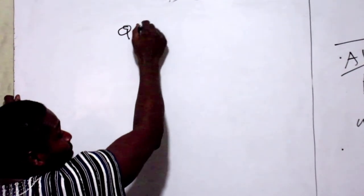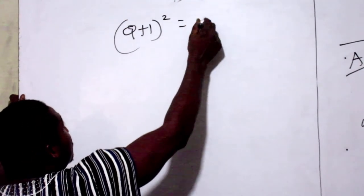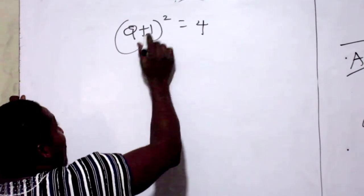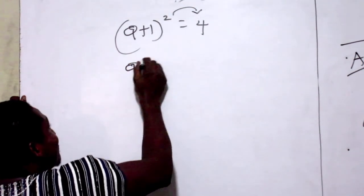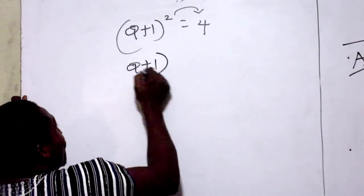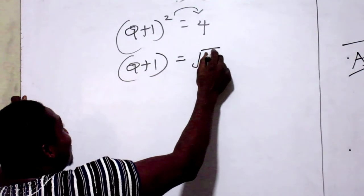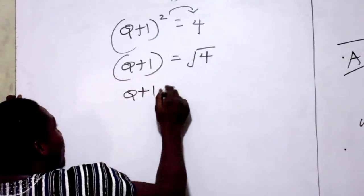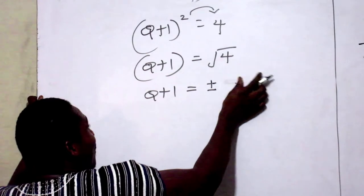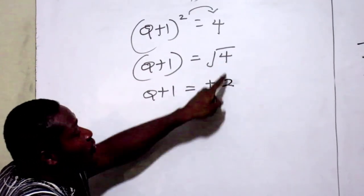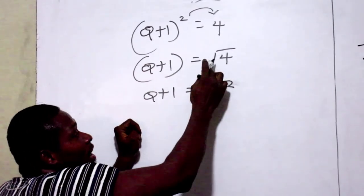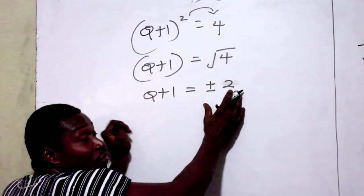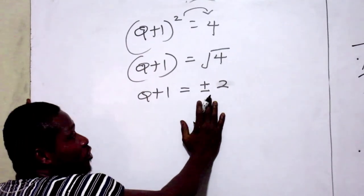So we have (KL plus 1) squared equals 4. Can you remember? This will form a root. Now you have KL plus 1 equals plus or minus root 4, plus or minus 2. Root of 4 is 2. Any time you take a root of an answer, it's always plus or minus the answer from the general quadratic rule.